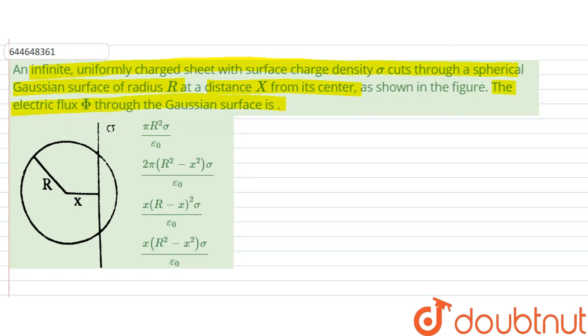So in this question, the infinite sheet inside the spherical Gaussian surface is a circular sheet. So it has a radius r.